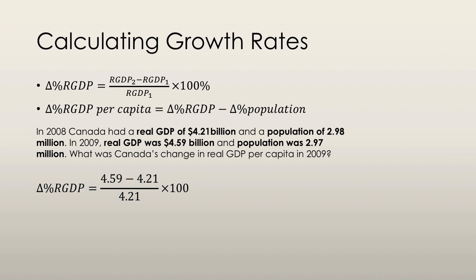We'll start by calculating the percent change in real GDP. We take the real GDP of 2009, subtract the real GDP of 2008, divide that by the real GDP of 2008, and multiply by 100. This gives us 9.03%. So the real GDP in 2009 was 9.03% higher than the real GDP in 2008.